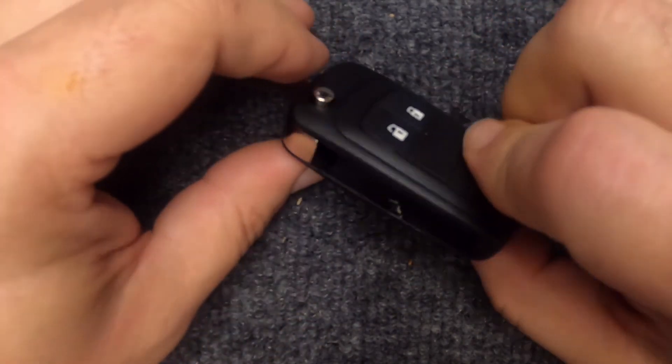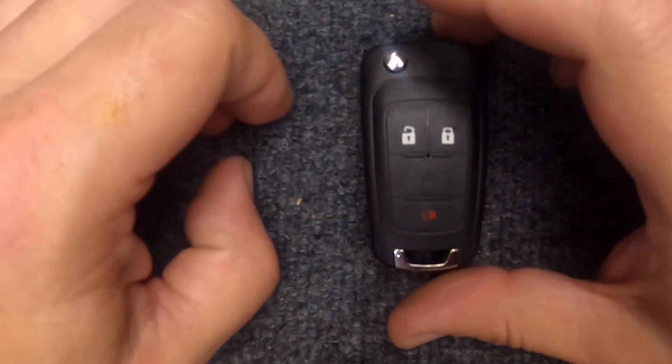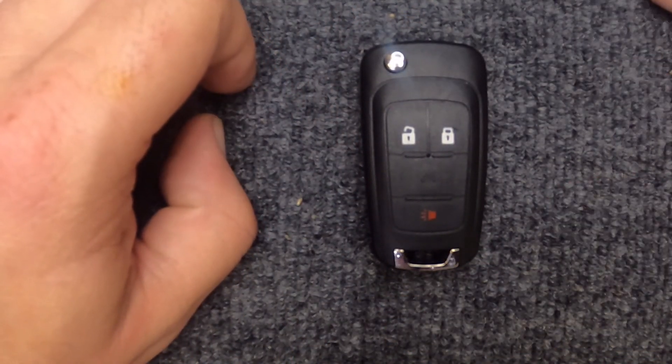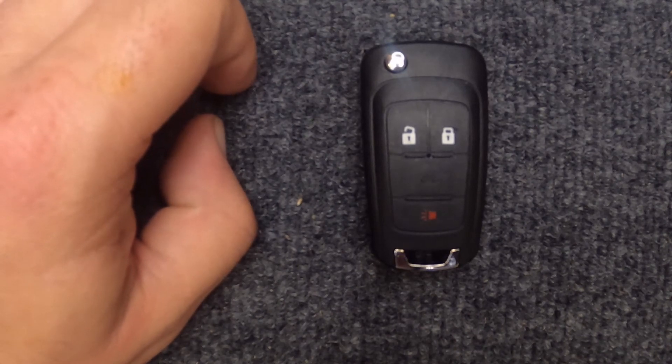Gently squeeze the two together, put the flip key back in, and there you go. You just changed the battery on your three-button flip key remote. Thanks for watching.